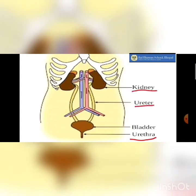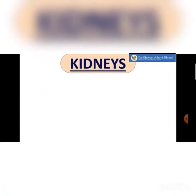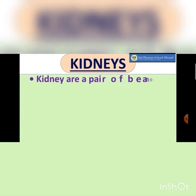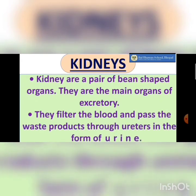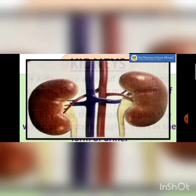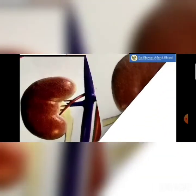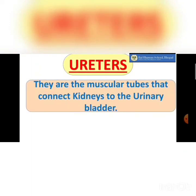The urinary system has a pair of kidneys, two ureters, a bladder, and a urethra. The kidneys are the main organ of the urinary system. They are a pair of bean-shaped organs that filter the blood and pass the waste products through the ureters in the form of urine. Their main function is to filter the blood.